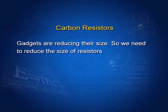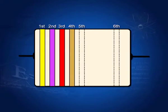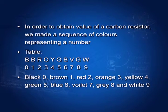Carbon resistor: in electronics, gadgets are reducing in size, so we need to reduce the size of resistors. We make resistors based on carbon. A carbon resistor has a band of three colors followed by a ring. The color code sequence is: black = 0, brown = 1, red = 2, orange = 3, yellow = 4, green = 5, blue = 6, violet = 7, grey = 8, and white = 9.